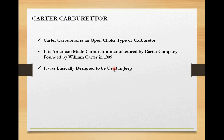What is a Carter carburetor? Basically it is an open choke type of carburetor. It is similar to a Solex carburetor but the arrangement is different. It employs a down-draft form of carburetor. It is an American-made carburetor manufactured by the Carter company, founded by William Carter in 1909. It was basically designed to be used in jeeps.